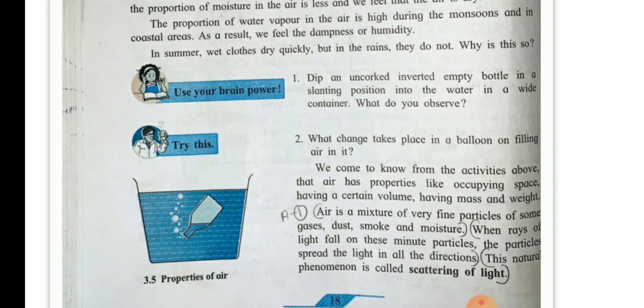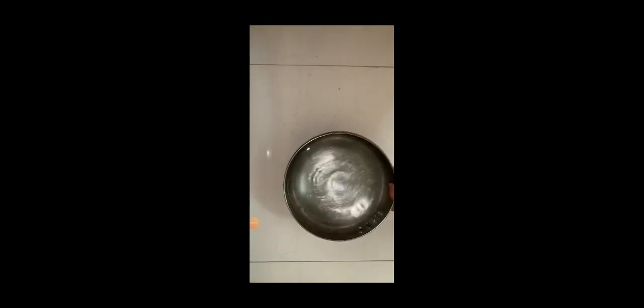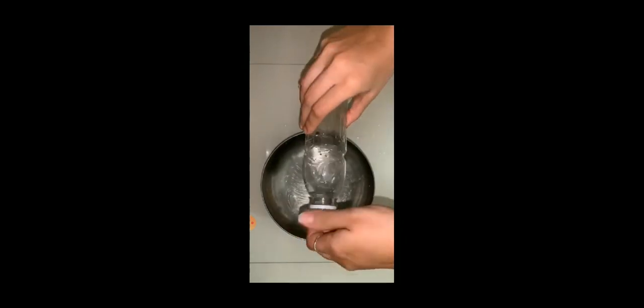Let us demonstrate a simple experiment. Take a container filled with water. Dip an uncorked inverted empty bottle in a slanting position into the water in the container. What do we observe? Air bubbles come out of the empty bottle and water enters the bottle. Empty bottle is not empty but has air in it. When air comes out, its place is taken by water.